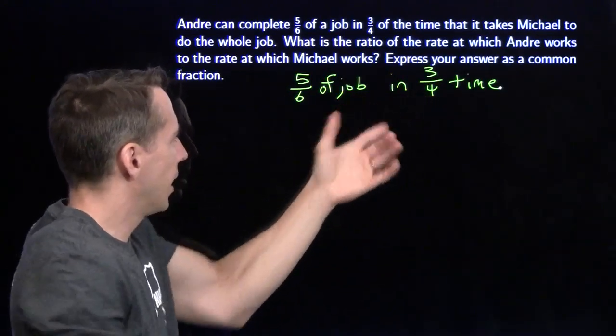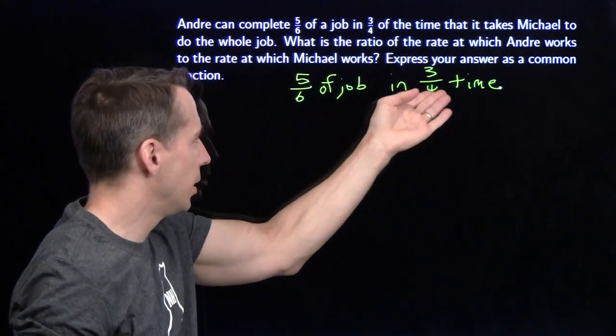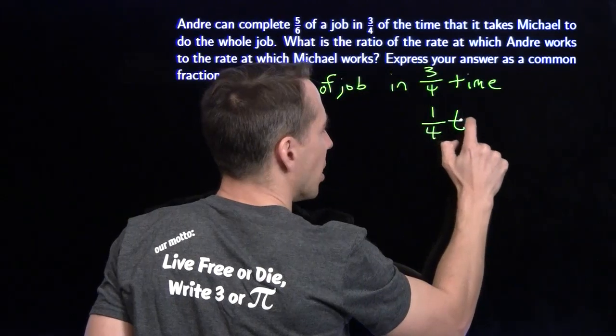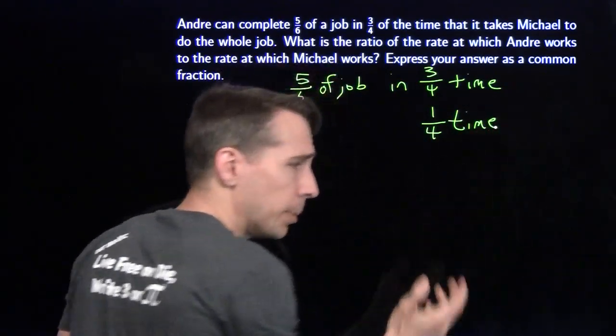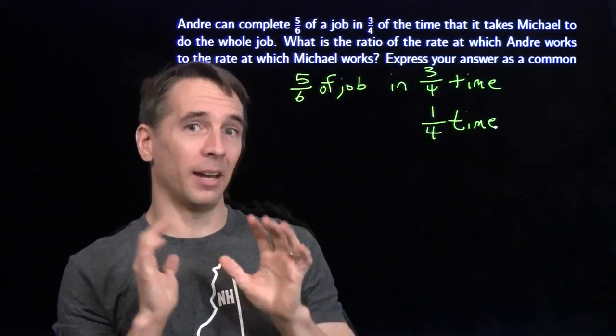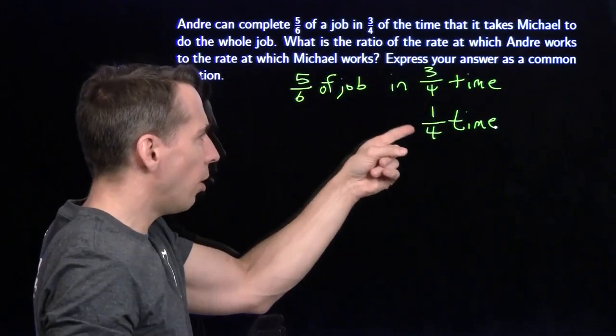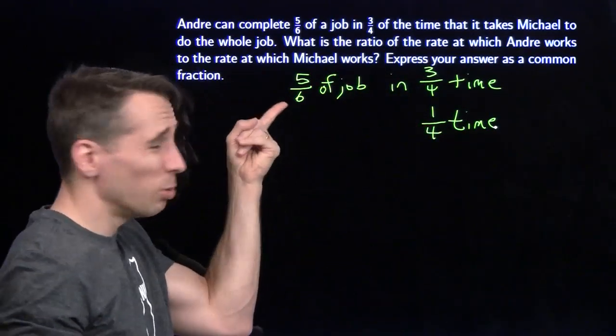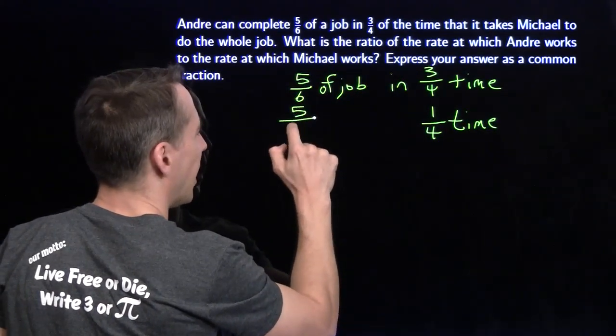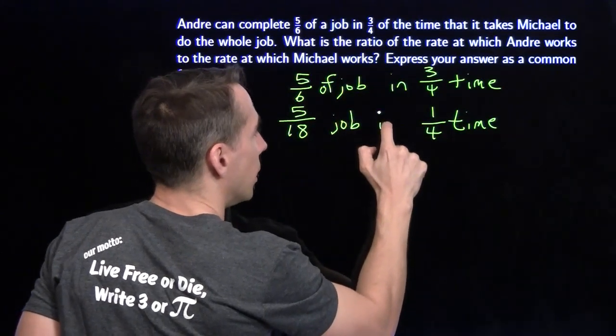So how do I do that? I can divide by 3 here. If he can do 5 sixths of a job in 3 quarters of the time, then in 1 quarter of the time, how much of the job is Andre doing? You might be able to jump to the end on this one, but I can't. I'm a little older than you are, so I've got to move more slowly. So I take a third of 3 quarters, and in a quarter of the time, you can do a third of this. And 1 third of 5 sixths is 5 eighteenths. So you can do 5 eighteenths of the job in 1 quarter of the time.